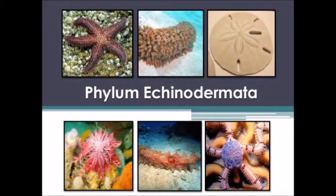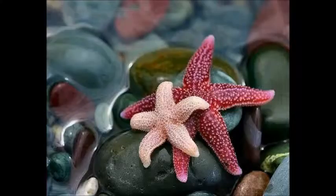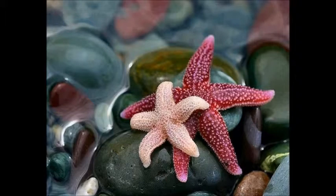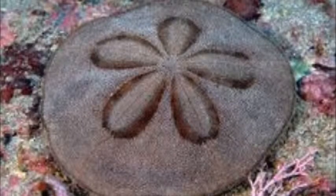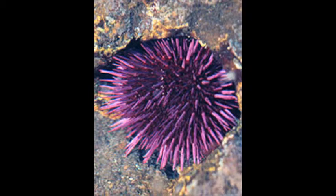Next we have Echinodermata. This phylum consists of sea urchins — the treasures of the seafloor. They can be radial, and bilateral. These organisms also contain tissues. Their digestive systems form, with the anus coming first.